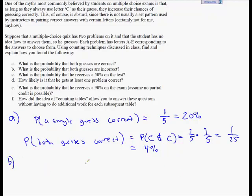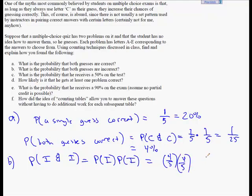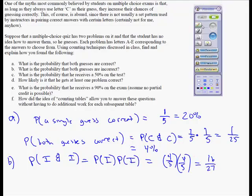So let's do problem B. What is the probability that both guesses are incorrect? Well, the probability that it's incorrect is the other four out of five. So incorrect and incorrect, and remember since under independence they don't depend on each other, it's the probability that it's incorrect times the probability that it's incorrect, which is basically four-fifths times four-fifths or four-fifths squared, which is equal to 16 out of 25.